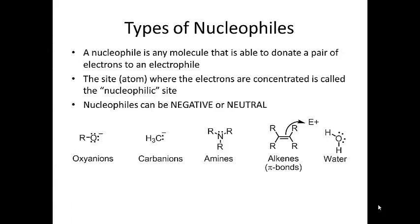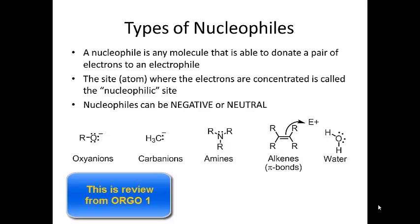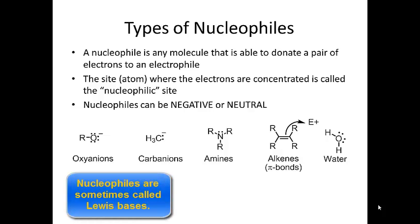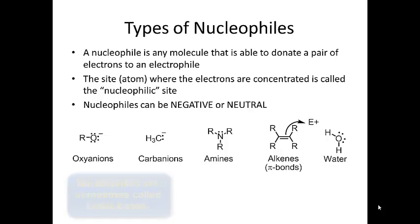So what is a nucleophile? It's any molecule that's able to donate a pair of electrons to an electrophile. There are several different types of nucleophiles — oxygen-based, carbon-based, nitrogen nucleophiles, and alkenes. The site in the nucleophile that reacts with the electrophile, we call that the nucleophilic site. Nucleophiles can be negative or neutral. If they're negative when they react, they become neutral. If they're neutral when they react, they become positive.